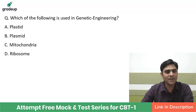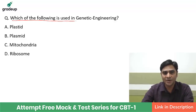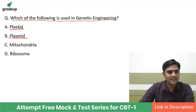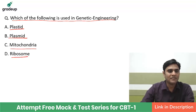Which of the following is used in genetic engineering? The options are Plastids, Plasmid, Mitochondria, or Ribosome. The right answer is Plasmid.